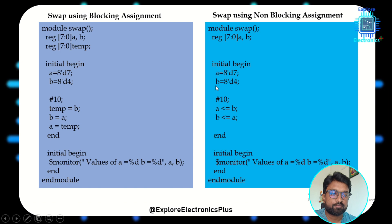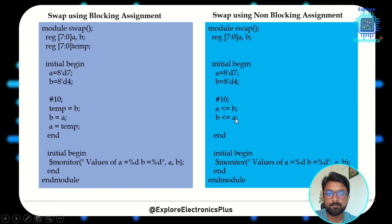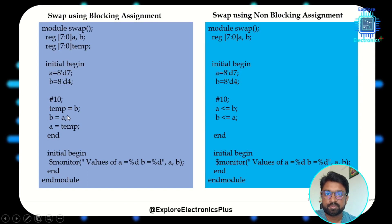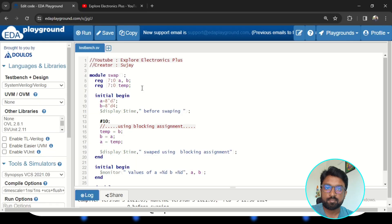But with non-blocking assignment, we can directly write a <= b and b <= a — no temporary register required. Because at the same time, the content of b is pushed to a and the content of a is pushed to b simultaneously. There's no race condition, and we can swap both values at once without any conflict.